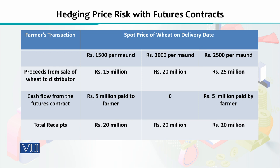After one month, he will get Rs. 20 million for selling his entire crop. Now, in this particular table, values are given showing what will happen if the price in the market after one month stays at Rs. 2,000 per maund, or goes down to Rs. 1,500 per maund, or goes up to Rs. 2,500 per maund. The overall proceeds from sale of wheat to the distributor will be Rs. 20 million if the price stays at Rs. 2,000 per maund.